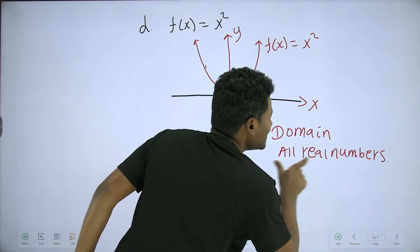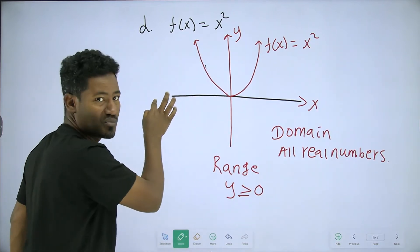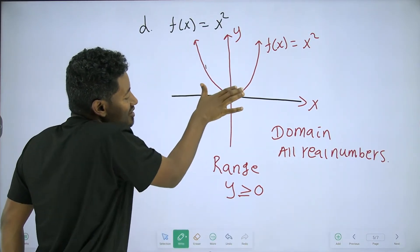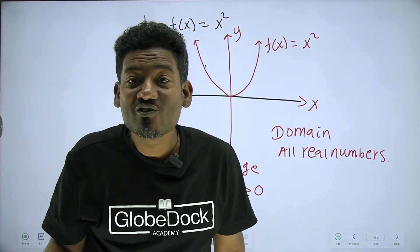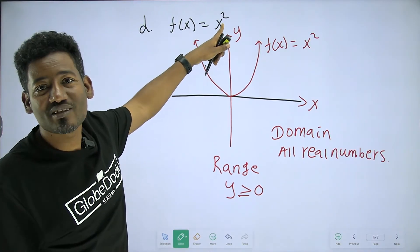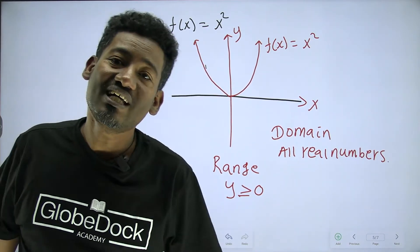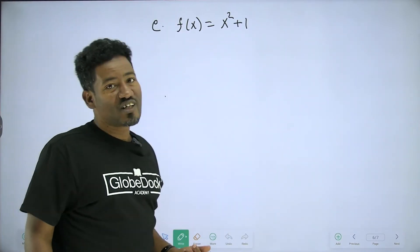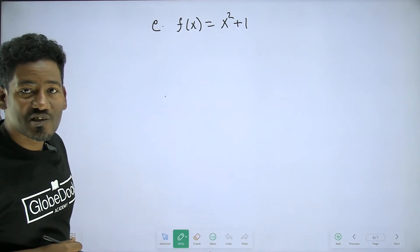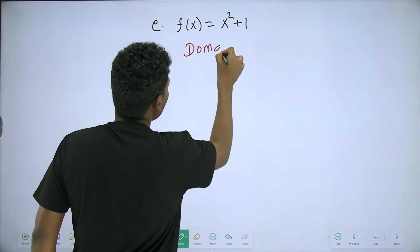When you look at input and output: if x is squared, a negative input gives a positive output. If x is negative, x squared is positive. If x is zero, the output is zero. So we can never get a negative output. f of x is equal to x squared plus 1. Domain: all real numbers.